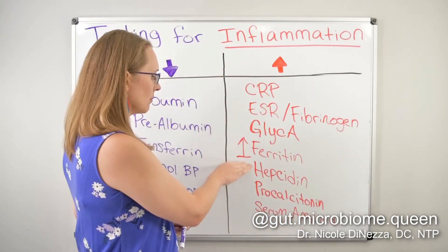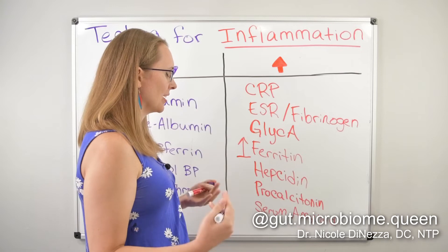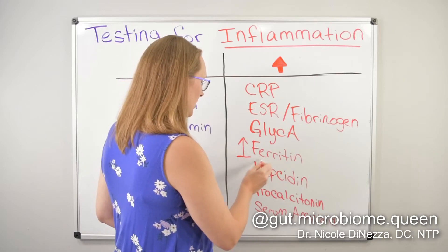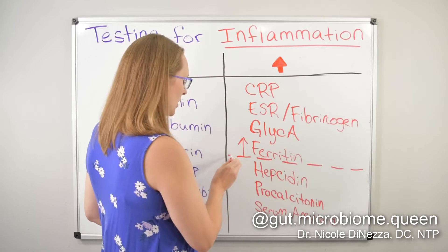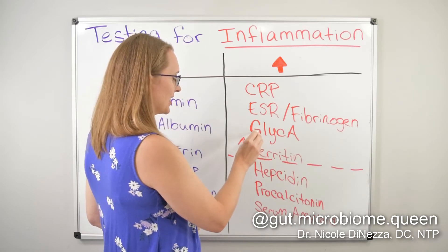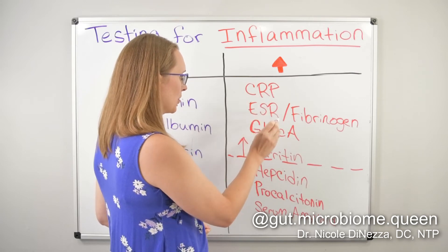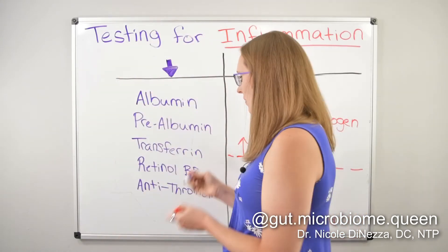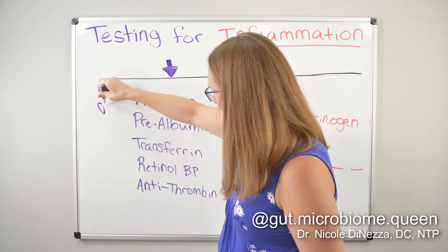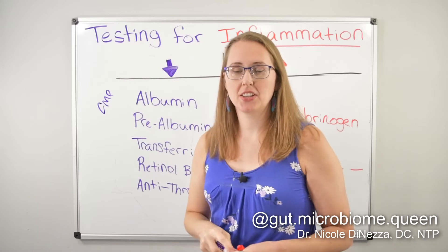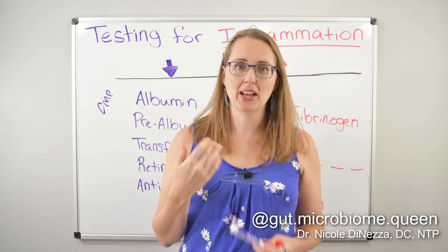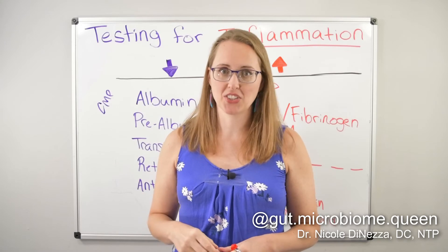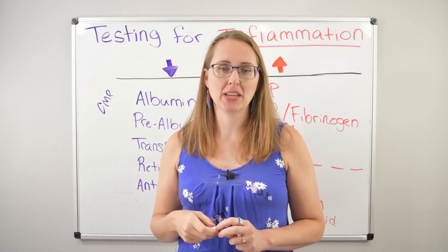If you're looking for tests you can get done at the doctor's office that would be indicative of inflammation, you're really looking at the top markers: ferritin, GlycA (only available through LabCorp), ESR, and C-reactive protein. I would not run fibrinogen separately because you can just run ESR for way cheaper. And albumin you can get done easily as part of a comprehensive metabolic panel or CMP — that's the test that looks at BUN, protein, AST, ALT, all of the liver and kidney function tests. Albumin will show up as part of a CMP, which is like a $5 or $10 test.